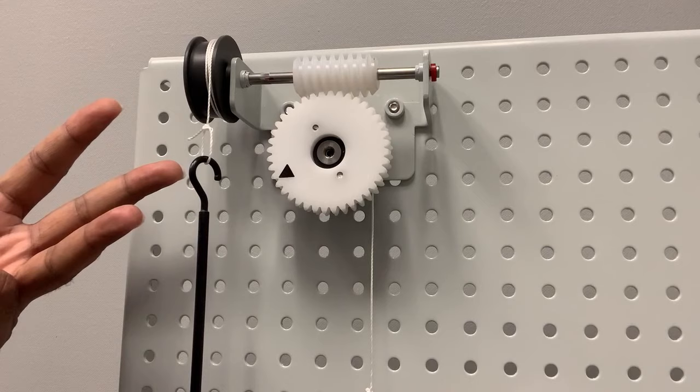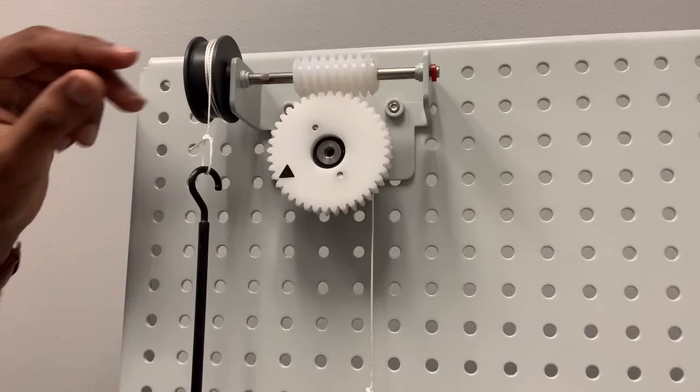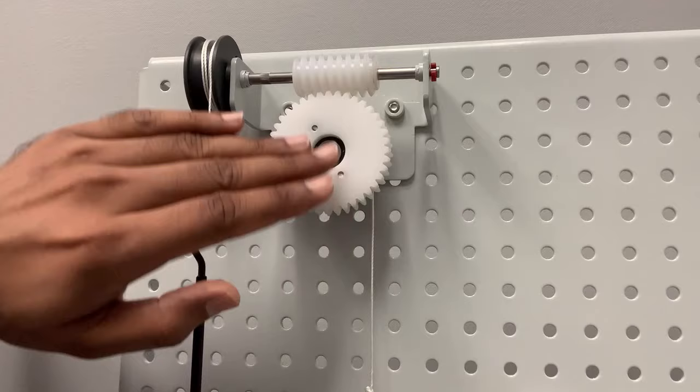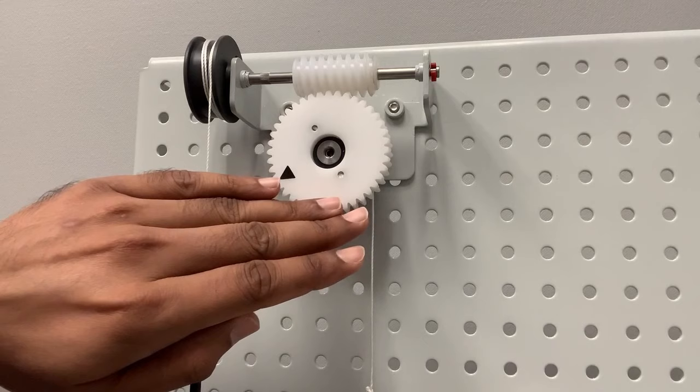There is also two-start and three-start worm wheel. What will happen is that the lead will be twice and thrice, meaning with one full revolution the wheel will move two threads, and for three-start worm drive the wheel will rotate three teeth.